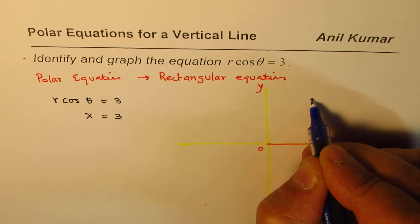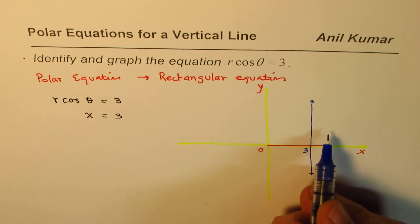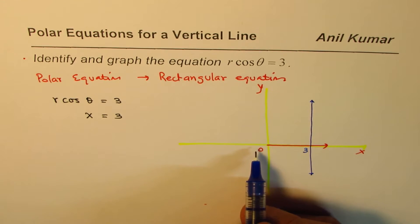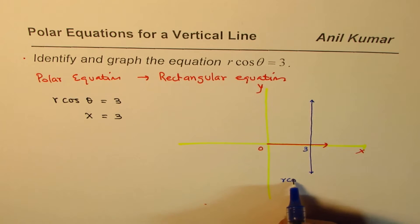which is a vertical line, 3 units away, will be the representative of x equals 3. And this line on the polar plane will represent the equation r cos θ equals 3.